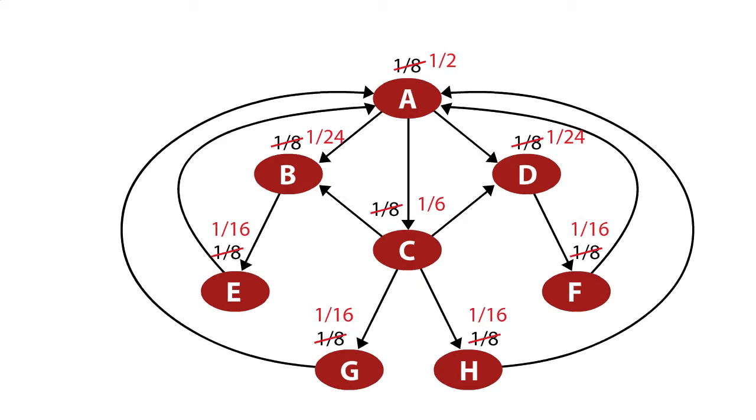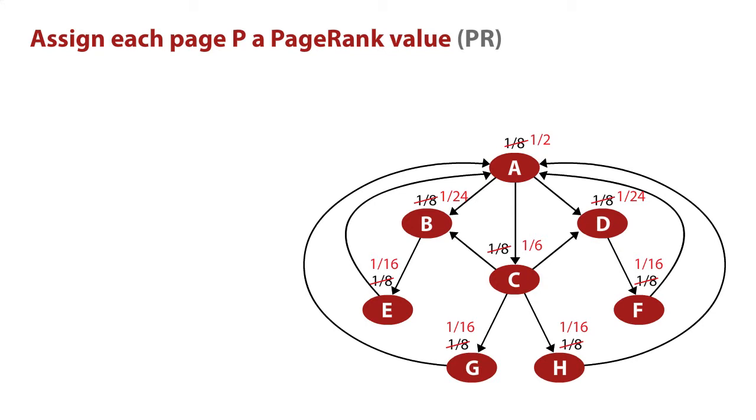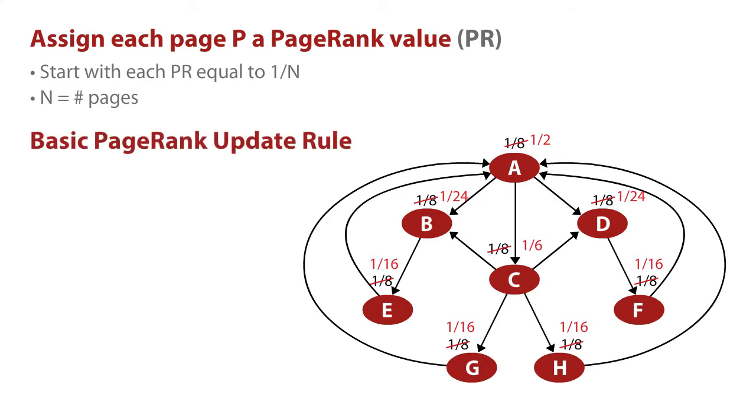And we just keep doing this. Actually, the other ones are much easier. B splits its PageRank into two. It gives 1/16th to E, and that's all E gets. All F gets is 1/16th over the other side. And similarly, C, remember in this starting out, C had 1/8th. It's going to end up with 1/6th, but right now has 1/8th. It splits it in half, and so G and H each get 1/16th also.